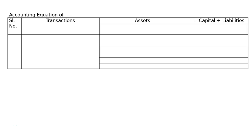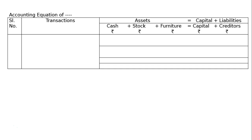The question is to prepare an accounting equation from the following. Draw the format of the accounting equation with columns: serial number, transactions, assets (cash, stock, furniture), capital, liabilities, and creditors with rupee symbols.